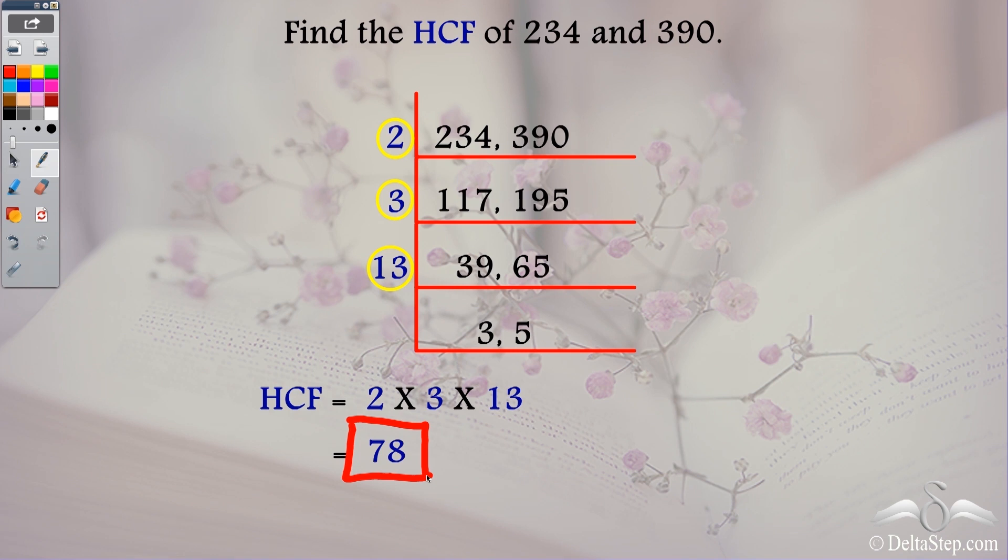And see how easily we have found this using this common prime factorization method. So the HCF of 234 and 390 is 78. So practice more and more HCF problems using this method till you can get them all correct.